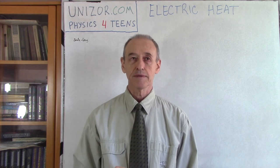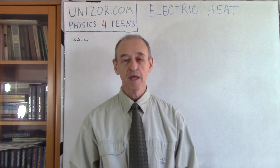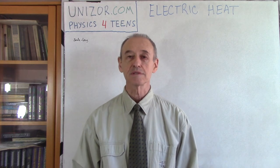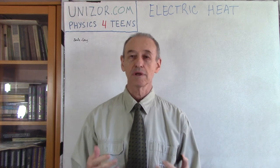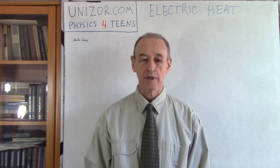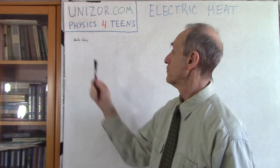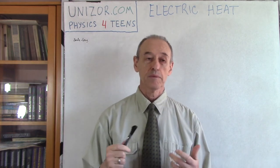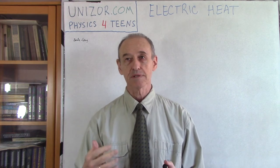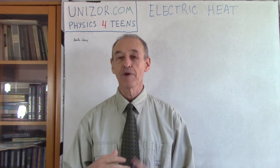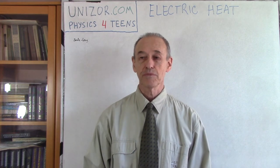As with many other things in physics, certain laws are discovered first experimentally and then later some theorists come up with an explanation. This is no exception. There were certain experiments conducted back in the 19th century, usually associated with two names: Joule and Lenz. These two physicists were experimenting with electricity and certain properties of the environments electric current was passing through. As a result, they came up with a very interesting property.